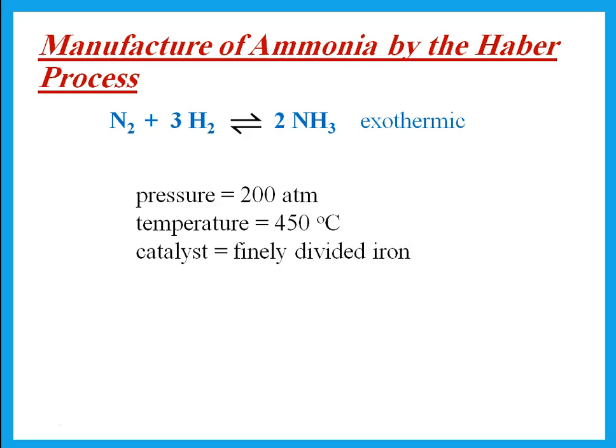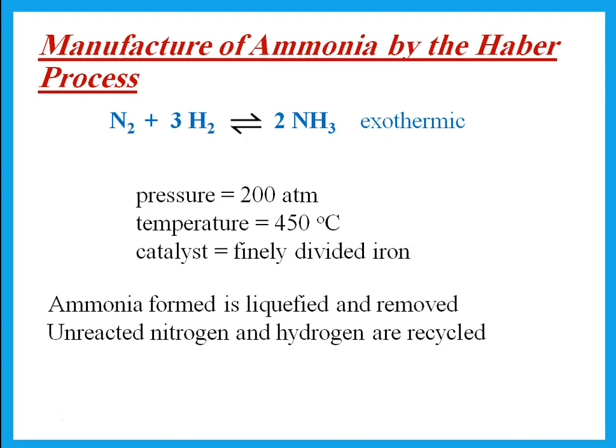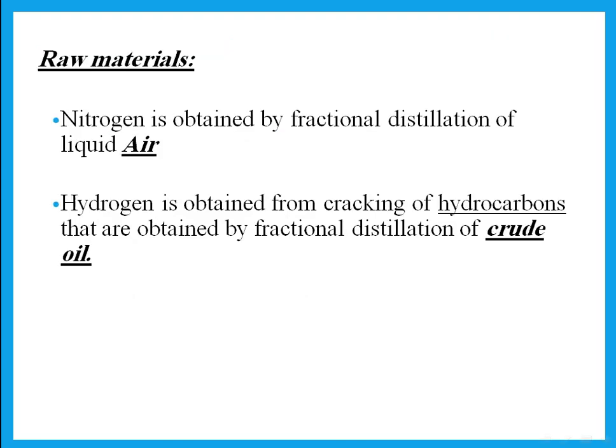A catalyst speeds up both the forward and backward reaction, so equilibrium is reached faster. As ammonia forms, it is liquefied and removed from the reaction to favour the forward direction. Any unreacted nitrogen and hydrogen are recycled back over the catalyst. The raw materials are: nitrogen, obtained by fractional distillation of liquid air, and hydrogen, obtained from the cracking of hydrocarbons from fractional distillation of crude oil. So the raw material for hydrogen is crude oil.